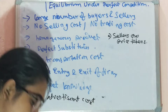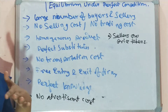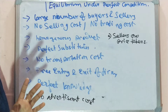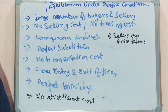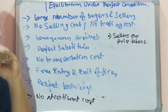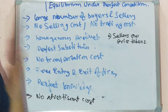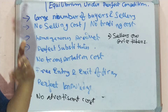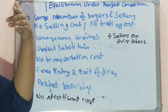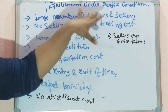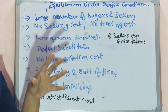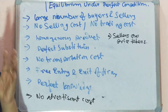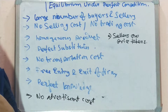The perfect competitive market has got two parts: one includes the firms and the other is the industry. We need to make a distinction between the firm and the industry. Industry is the collection of firms.